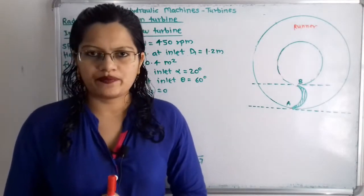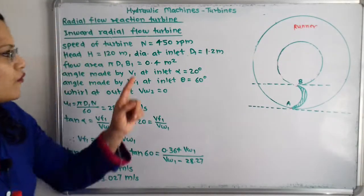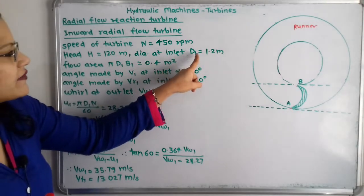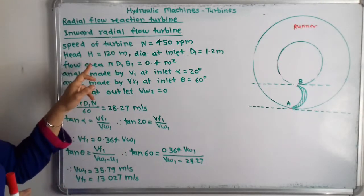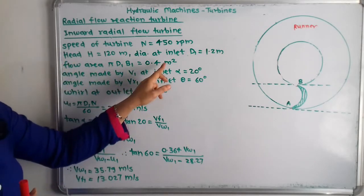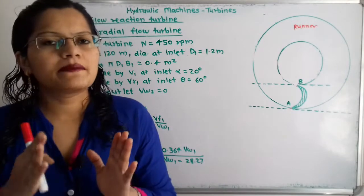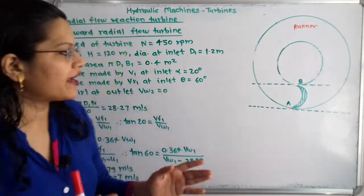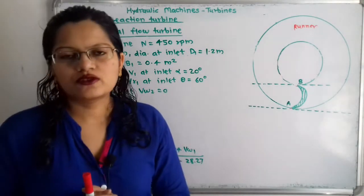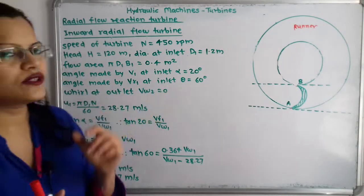Let us first understand the given data. Speed of turbine N = 450 rpm, head H = 120 meters, diameter at inlet d1 = 1.2 meters, flow area π·d1·b1 = 0.4 meter square. The angle made by absolute velocity at inlet, theta, equals 60 degrees, and whirl at outlet Vw2 = 0.